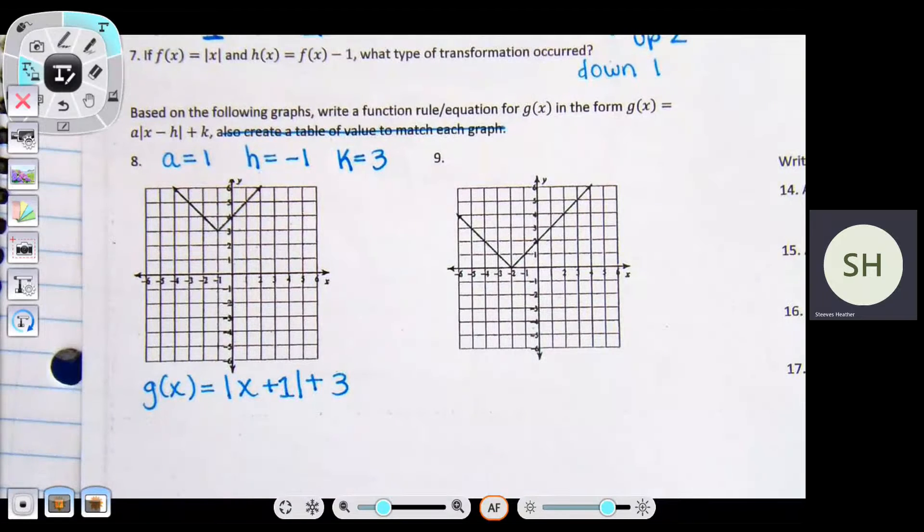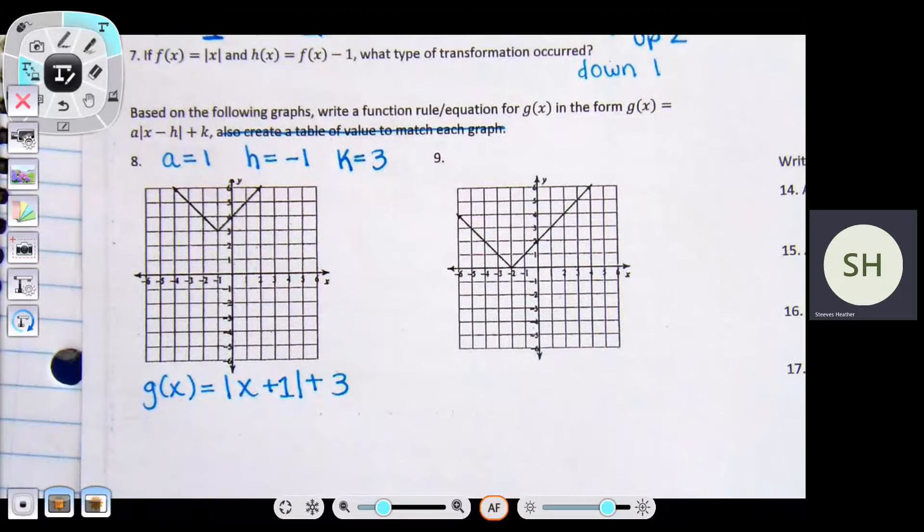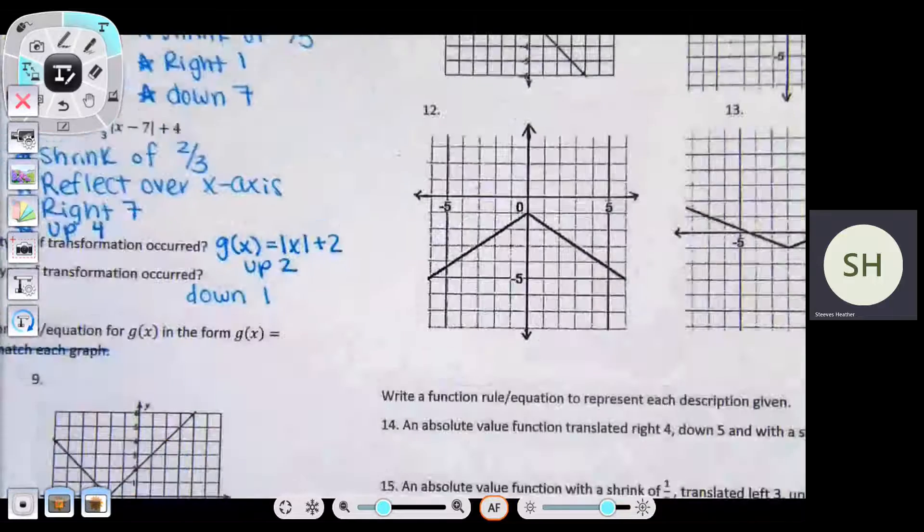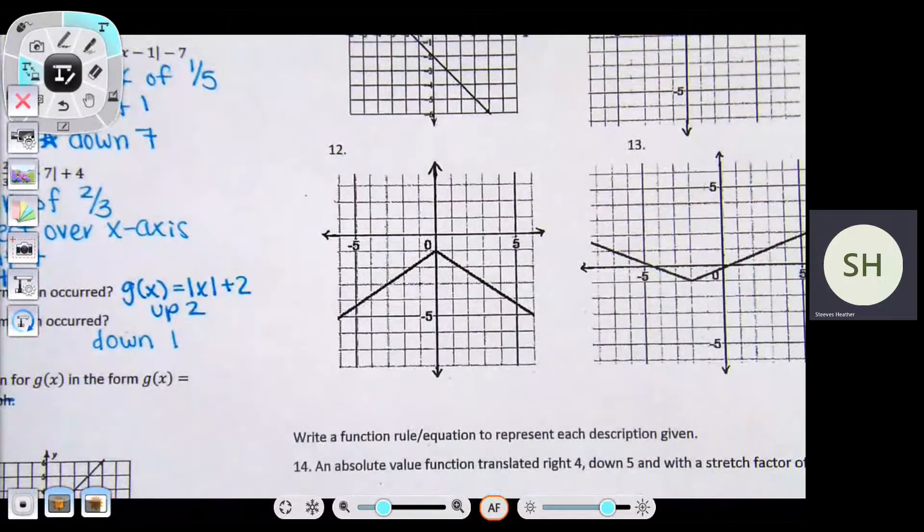I don't have to write a because a is equal to one. Maybe if you get off your phone, it won't be so confusing. So once you have a, h, and k, if a is anything other than one, you need to talk about it. If a is positive one, you can just skip it. Let's go to twelve.